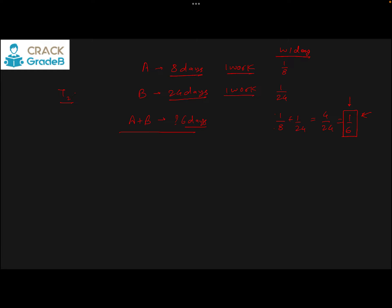All you have to do is take the reciprocal and the answer is 6 days. If you try to solve in fraction form it is not always easy, so if the question is asked in the same language you can use the formula. The formula says: if A does a work in 'a' days and B does a work in 'b' days, together A and B will do the work in ab/(a+b) days. Here a = 8 and b = 24, so 8×24/(8+24) = 192/32 = 6 days.